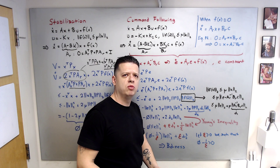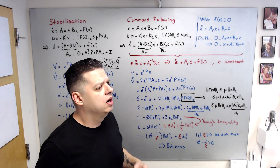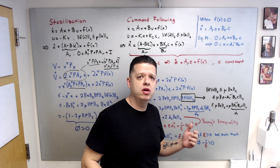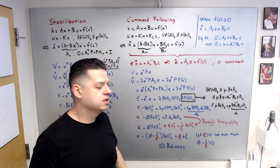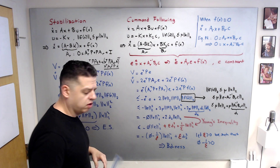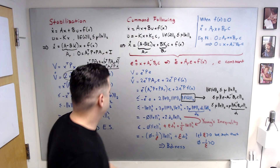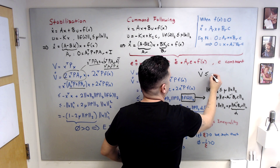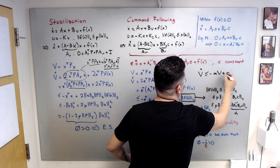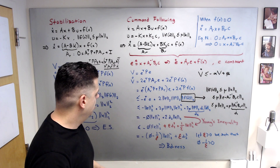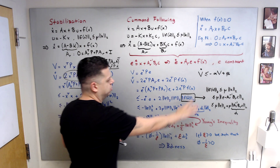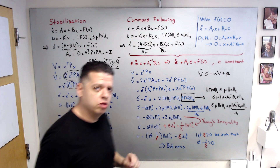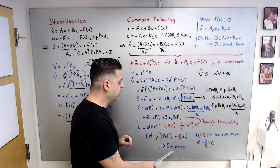For a couple more steps on completing boundedness, see my Lyapunov stability video on the channel. Essentially, from this final form you write V-dot in terms of minus alpha*V + beta to complete the boundedness argument. From here you get boundedness — not asymptotic or exponential stability.